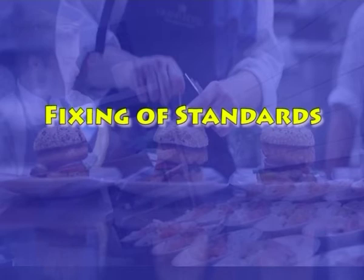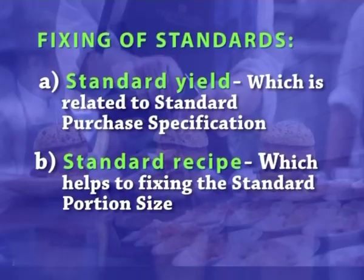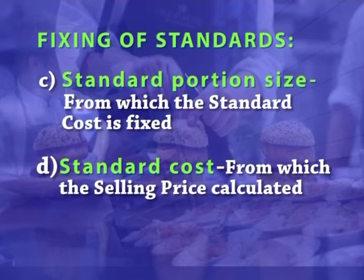Now we shall move on to the next aspect: fixing of standards. The four stages in reducing loss from inefficient purchasing and processing, overproduction and excessive portion sizes are: fixing of standards — standard yield, which is related to standard purchase specification; standard recipe, which helps to fix the standard portion size; standard portion size, from which the standard cost is fixed; and standard cost, from which the selling price is calculated.